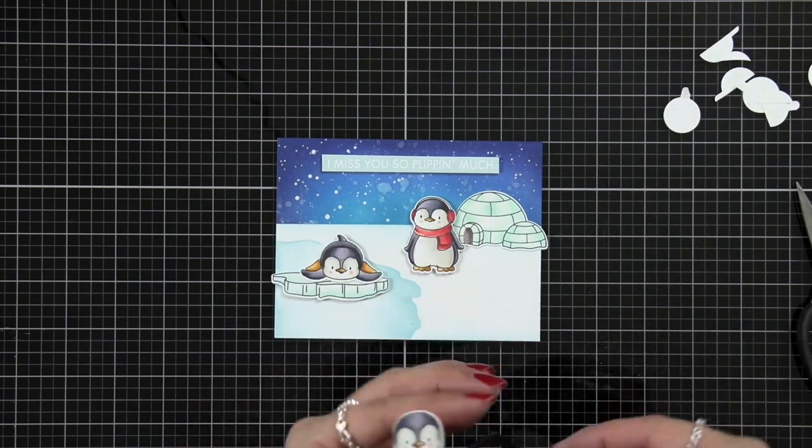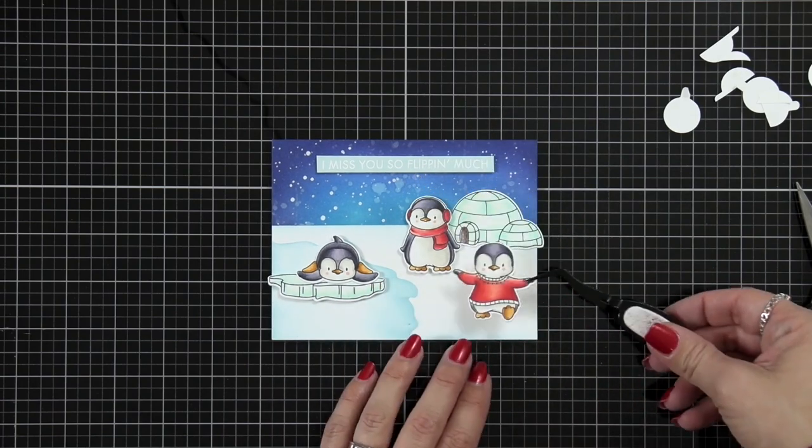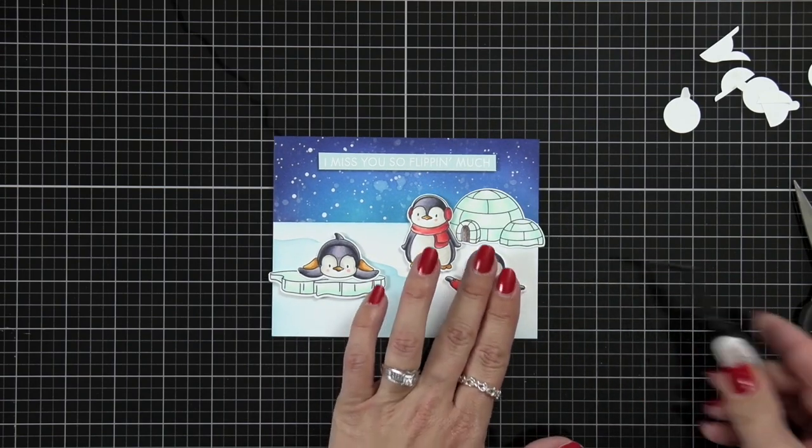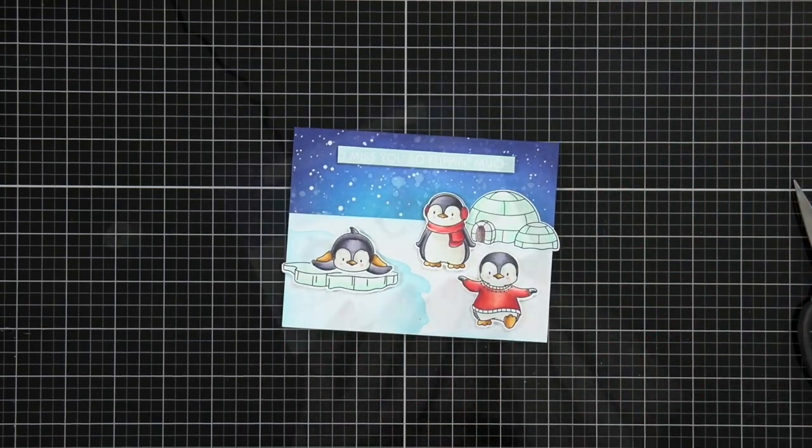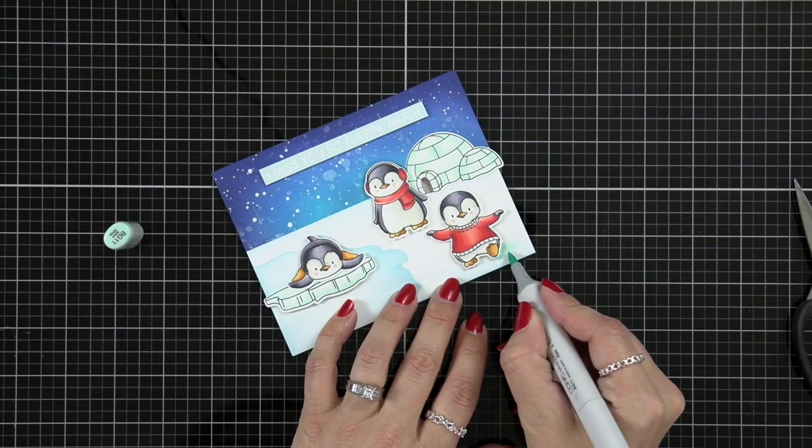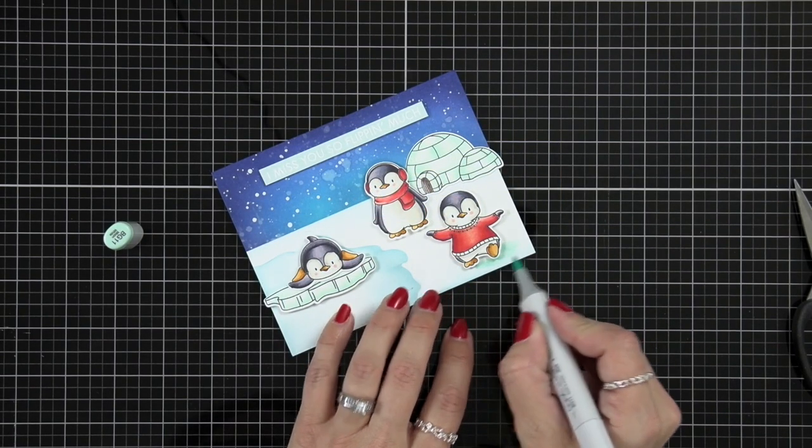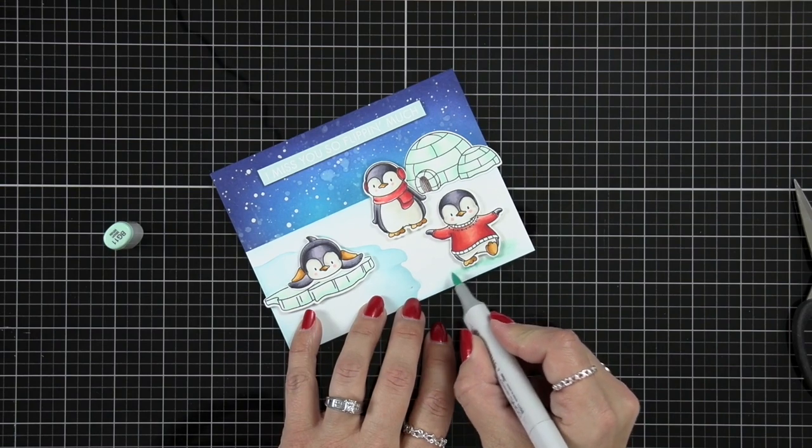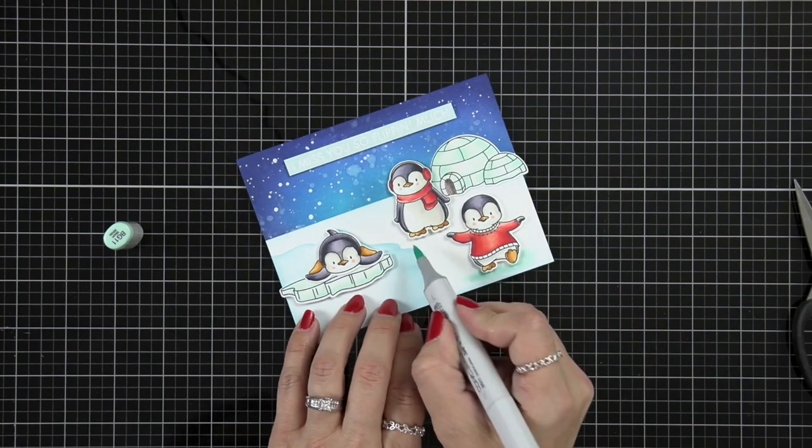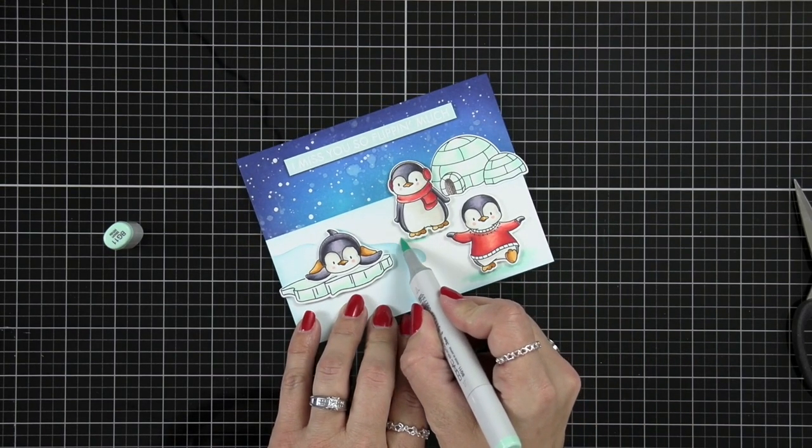But my penguins were kind of almost floating in nothing. There was no other definition to that background so I took out that BG11 and I'm adding little flicks of color onto them to give them kind of a shadow of where they're standing, kind of grounding them to the background.